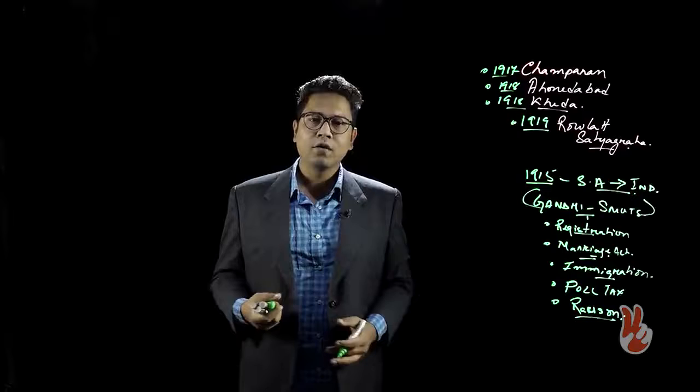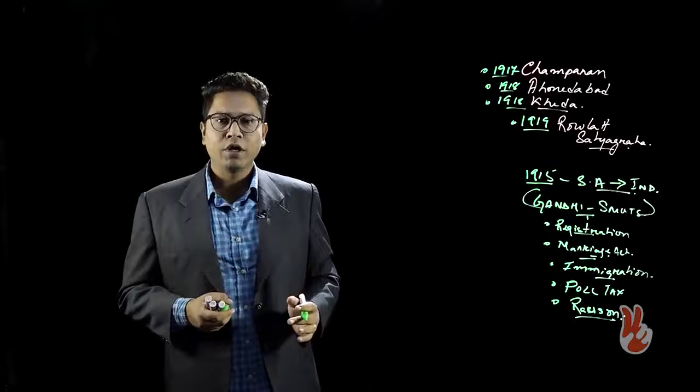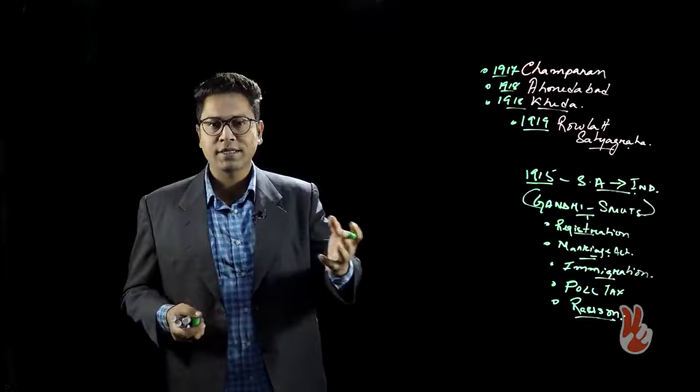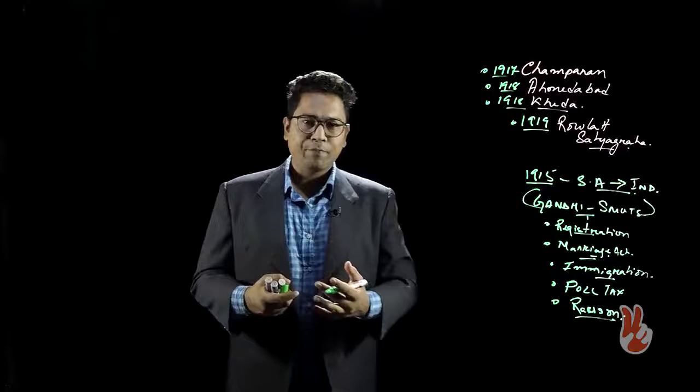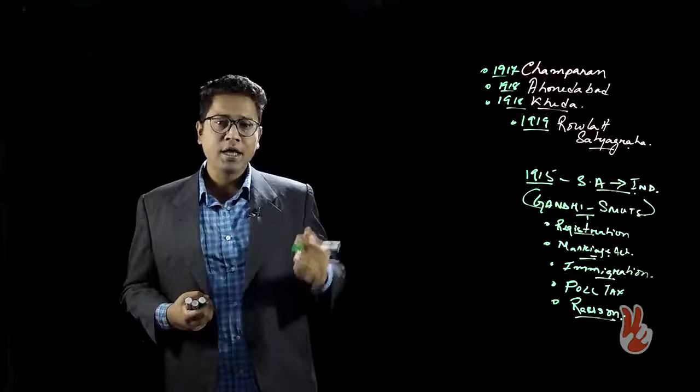In a non-cooperation movement you stop cooperating with the government, but civil disobedience is a more proactive form — along with not cooperating, you also court arrest by openly defying the laws of the government. By doing both these things, you are trying to undermine the hegemony of the ruling government. These ideas were deployed in Champaran, Ahmedabad, and Khera.